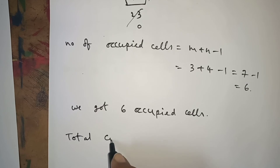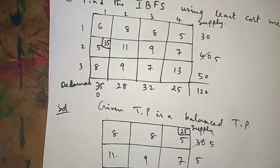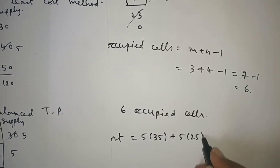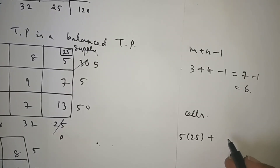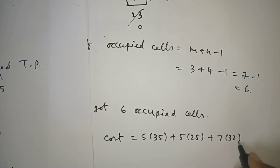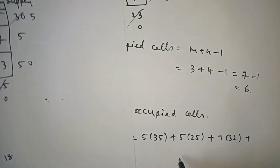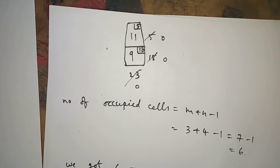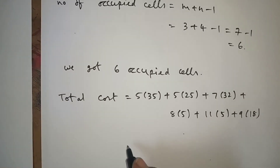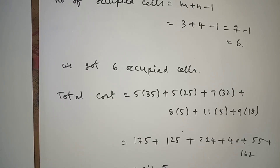Total cost equals: first box 5 × 35, second box 5 × 25, third box 7 × 32, fourth box 8 × 5, then 11 × 5 plus 9 × 18. Simplifying all of these gives a total cost of 781 rupees.